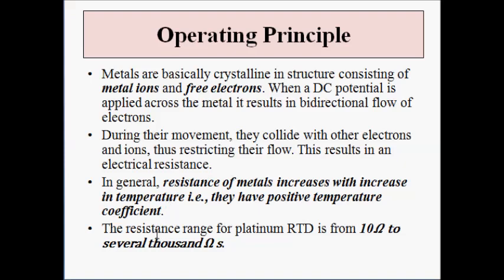The electrical resistance of RTD elements is directly proportional to the surrounding temperature. The resistance range for platinum RTD, which is the preferred metal for fabrication of RTD, is from 10 ohms to several thousand ohms. The restriction of electron movement due to collision with metal ions and free electrons causes electrical resistance, which is directly proportional to surrounding temperature — these are the two key points related to RTD.